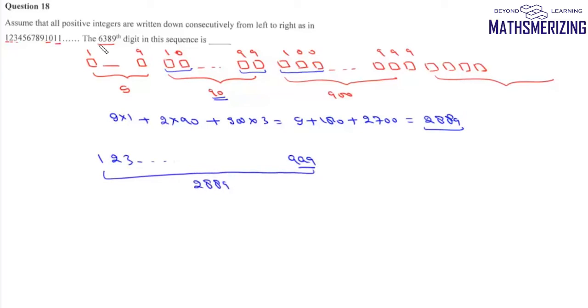Now the question says we need to find the 6389th digit, so we need to find the digit in the 6389th place. The remaining numbers will be 6389 minus 2889.